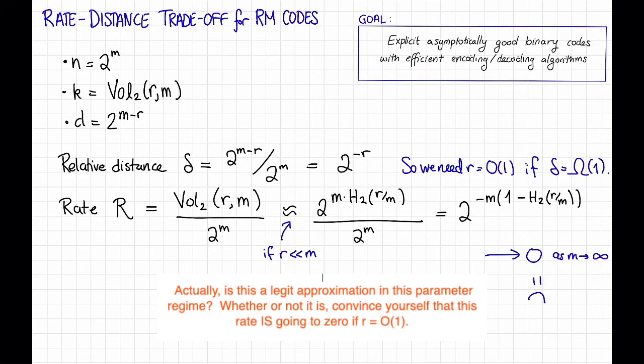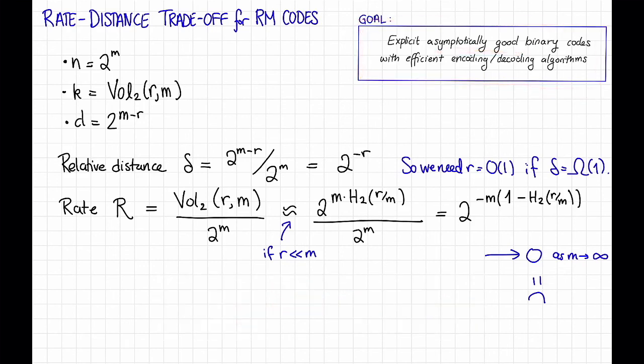In particular, unfortunately binary Reed-Muller codes are also not going to achieve our goal because they're not asymptotically good. If we want constant relative distance, the rate needs to be going to 0.